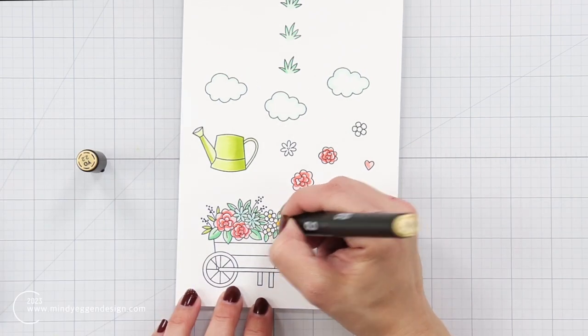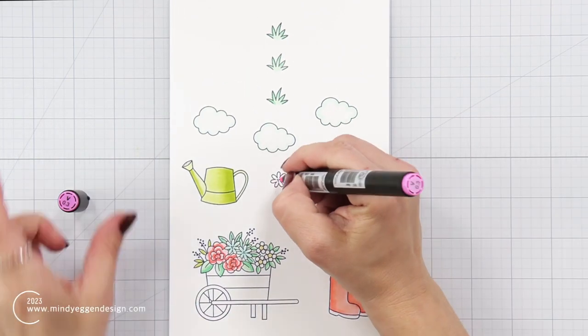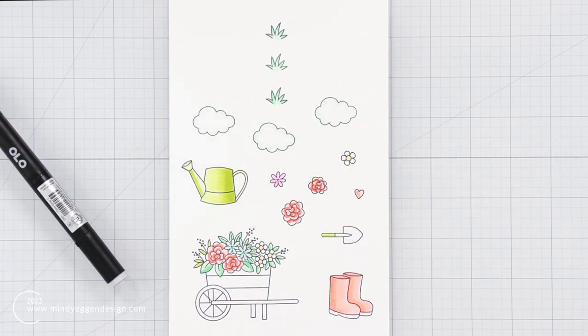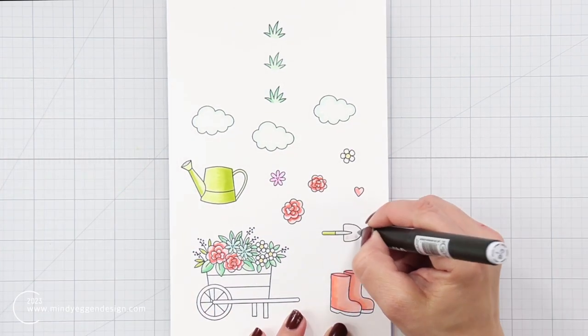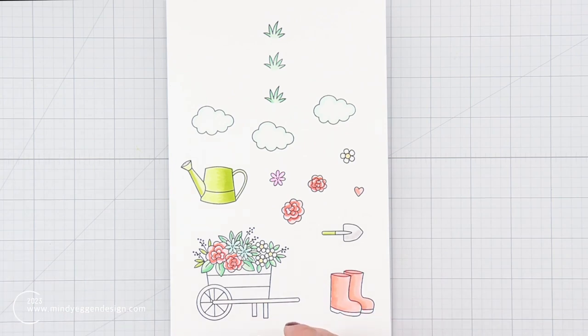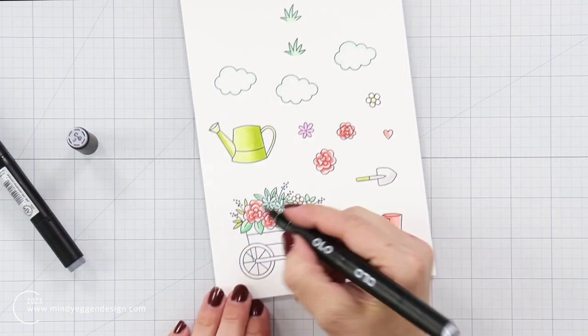I added a light yellow to the center of some of those flowers. I'm going to make one of those other flowers kind of more of a purple color. I have some light gray for the shovel.